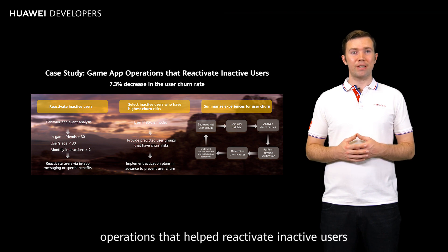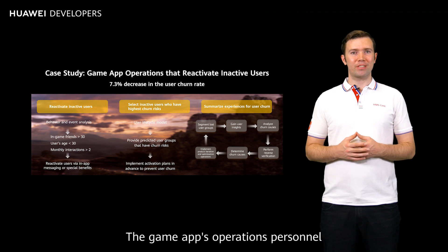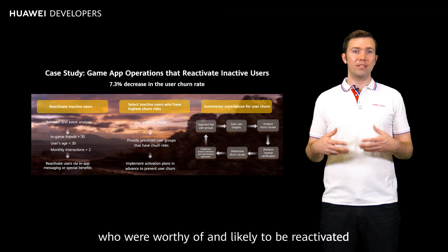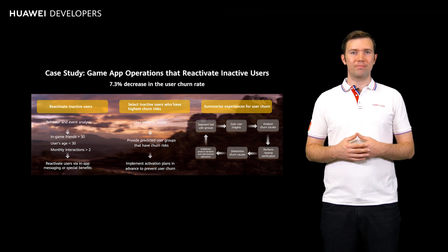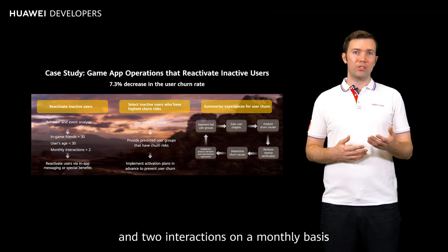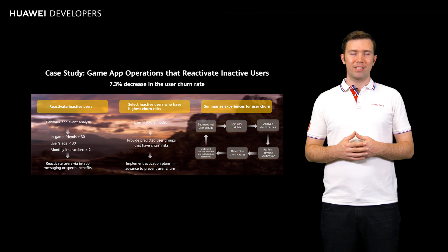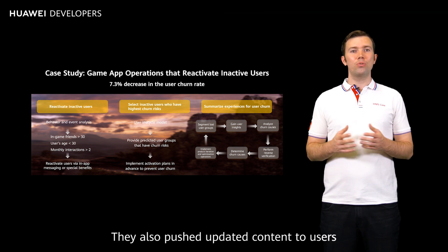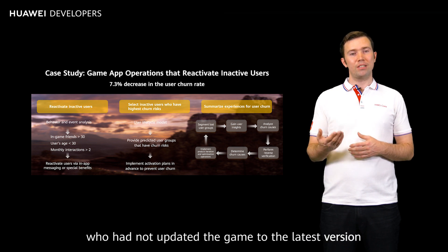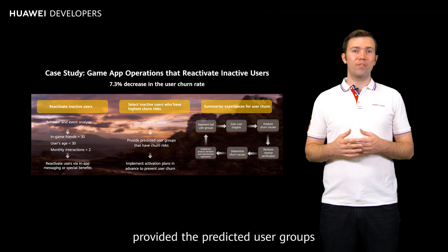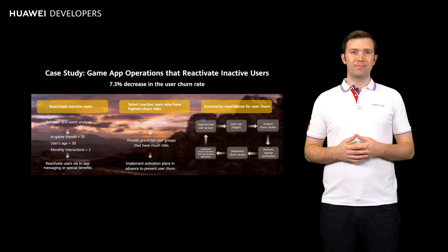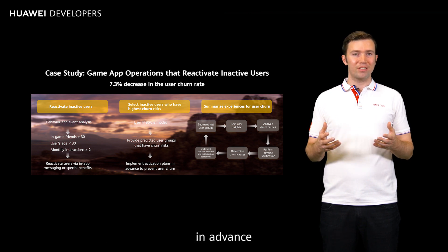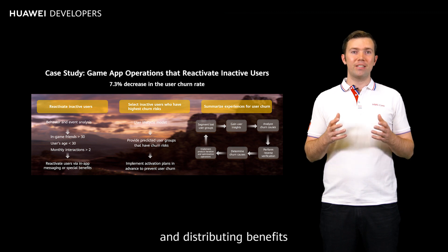With Huawei Analytics Kit, you will be able to determine the characteristics of lost users, enhance detection capability before user churn, use data from lost users to help optimize promotions for current users, and increase the activation and loyalty of active users by improving operations policies. Now let's look at a successful game app operation that helped reactivate inactive users. The game app's operations personnel first selected inactive users who were worthy of and likely to be reactivated by performing event and behavior analysis. It was determined that users who were younger than 30 and had made at least 30 friends in the game and two interactions on a monthly basis showed the most potential. The operations personnel then designed targeted plans for reactivating inactive users, found out the installation channels of inactive users, and added new content there to attract users. They also pushed updated content to users who had not updated the game to the latest version for quite some time.